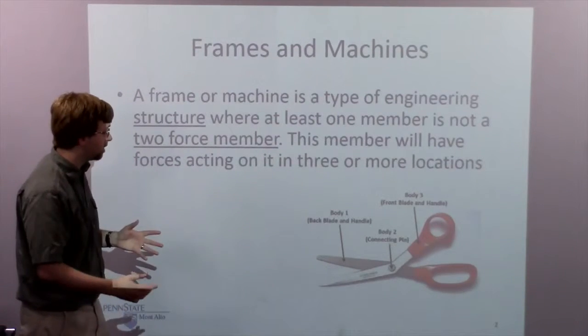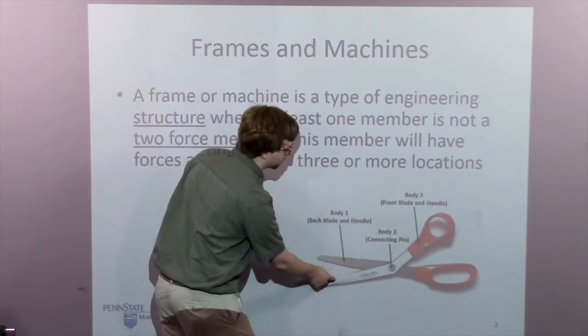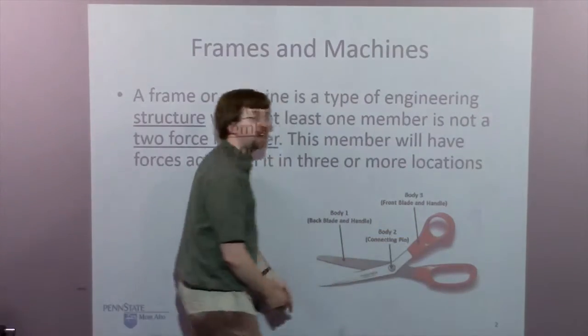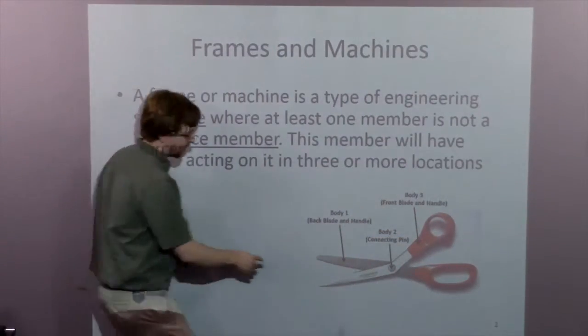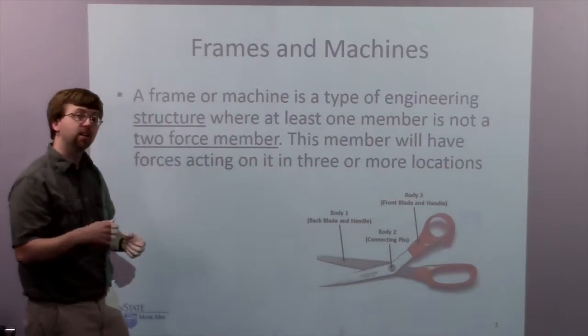So some examples, we've got this pair of scissors. If I'm cutting something, I have a force right here from whatever I'm cutting. We've got the pin joint in the middle and I'll be pressing down on the handle part over here. So they've got one, two, three locations. This is going to be a machine because it's not rigid.